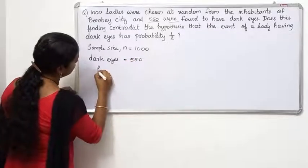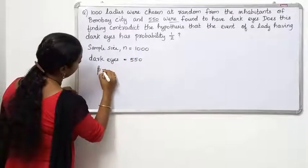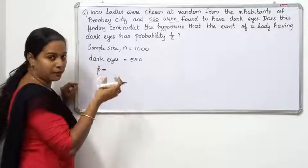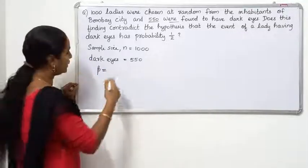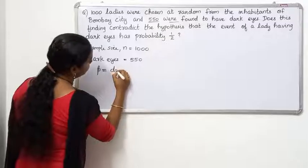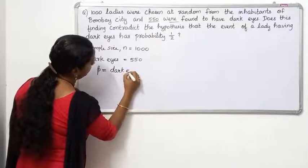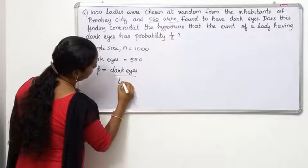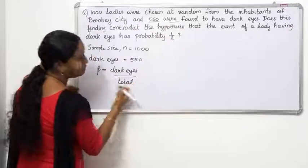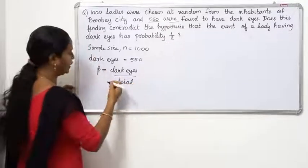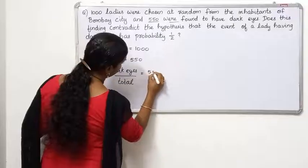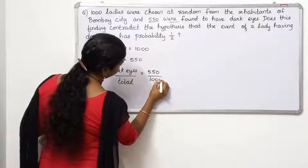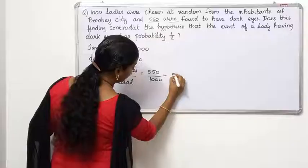The sample proportion, small p, is the number of items having a particular property divided by the total number of items. The property here is dark eyes, which gives us 550 by 1,000, equal to 0.55. So the sample proportion is 0.55.